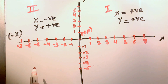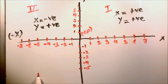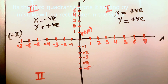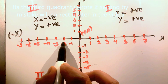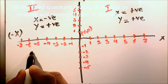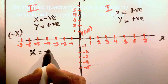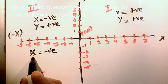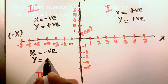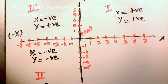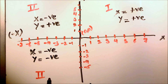The third quadrant is here on this side. In the third quadrant, both the numbers x and y are negative: x is negative as we are going on the left-hand side, and y is also negative as we are going down. So both numbers in the third quadrant are negative.